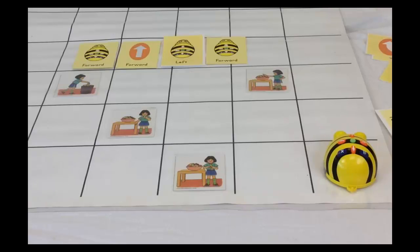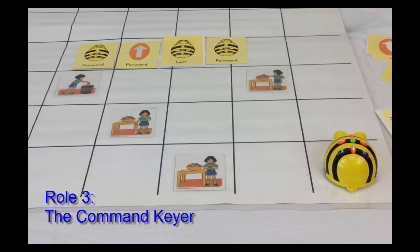The program they've written is forward, forward, left, forward. Now, the command keyer is going to enter that into the robot.